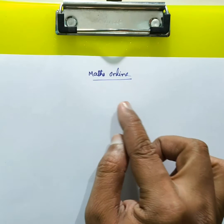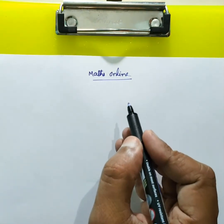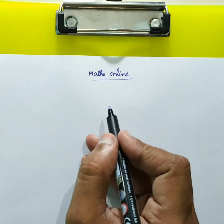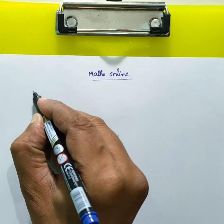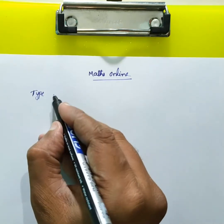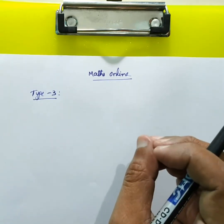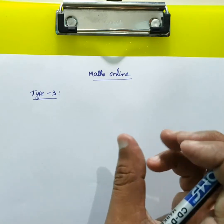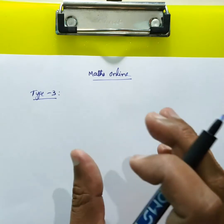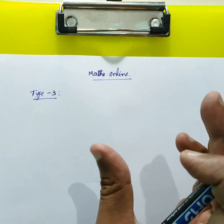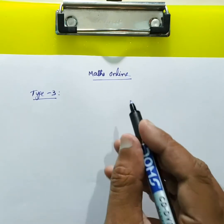Hi, I am Syed on MassOnline. Today we will be dealing about the topic of finding out the particular integral of polynomial function. We will take this polynomial function as Type 3. In the previous video we have already seen how to find out the particular integral of an exponential function as well as trigonometric function. Now we will try to discuss about the polynomial function.